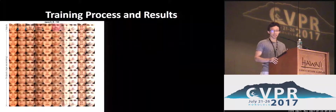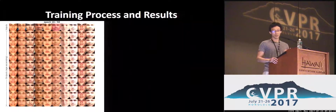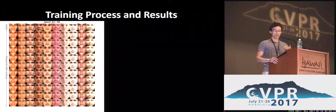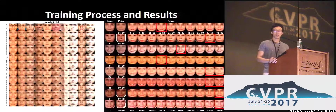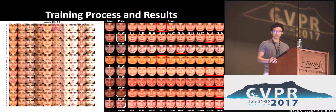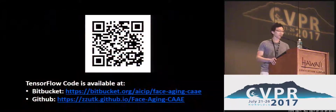Here is the training process. The first row shows input images, and the rest are generated images of different ages at different epochs. On the right are some results compared to the best prior works. Thank you.